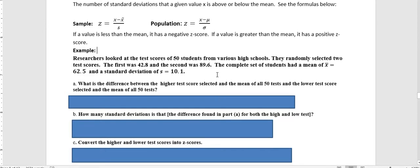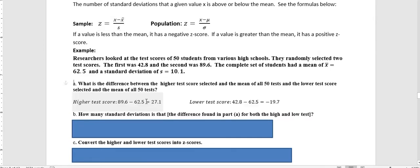We're first asking, what's the difference between the higher test score selected and the mean of the 50 tests, and the lower test score selected and the mean of all 50 tests? When we talk about the difference, we're really looking at the top part of the formula.